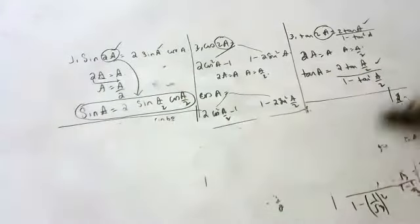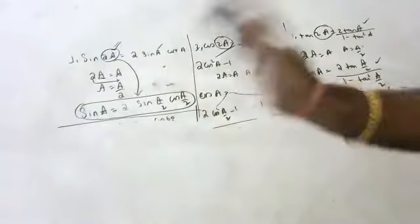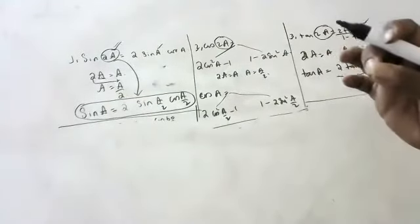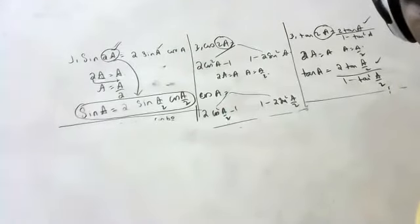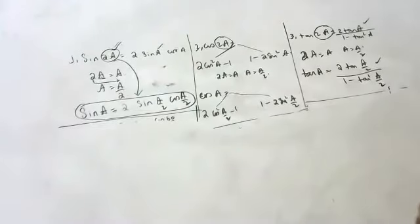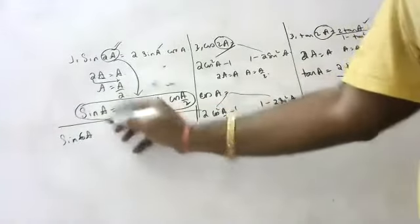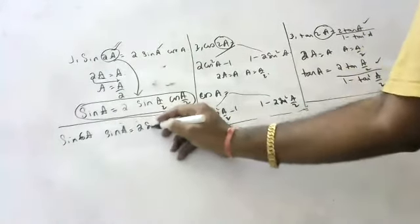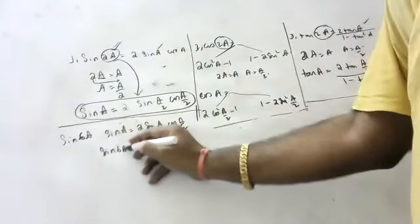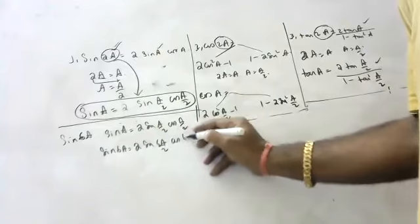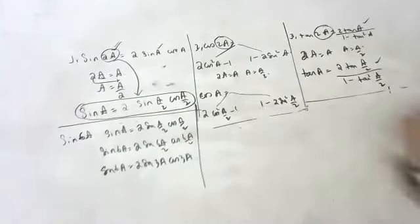I hope you all understood these formulas. Using these formulas, every day there are problems. Suppose someone asks you what is sin 6a. We know sin a is 2 sin(a/2) cos(a/2). So sin 6a is 2 sin(6a/2) cos(6a/2), which we can write as 2 sin 3a cos 3a.